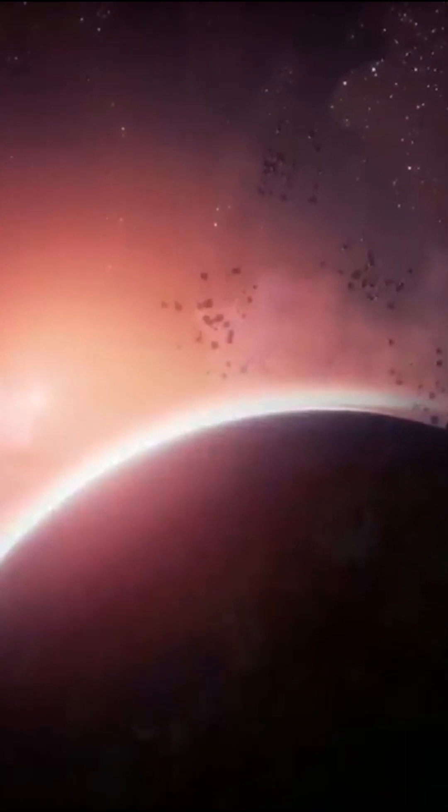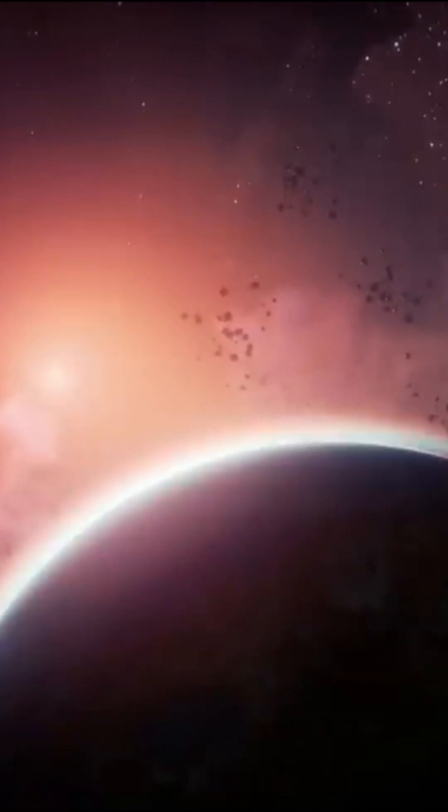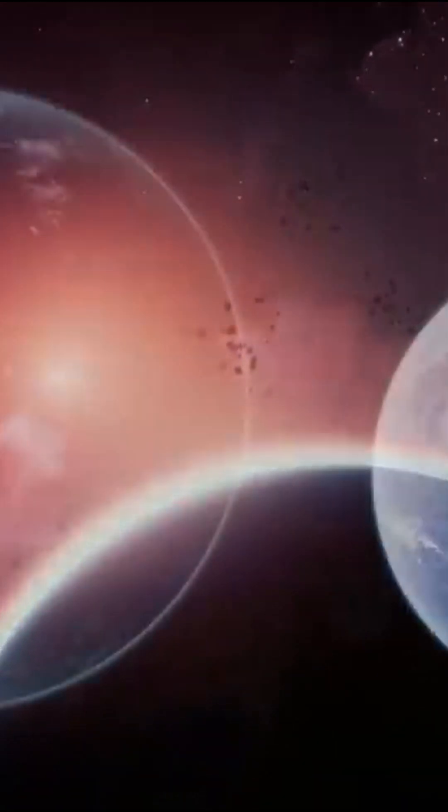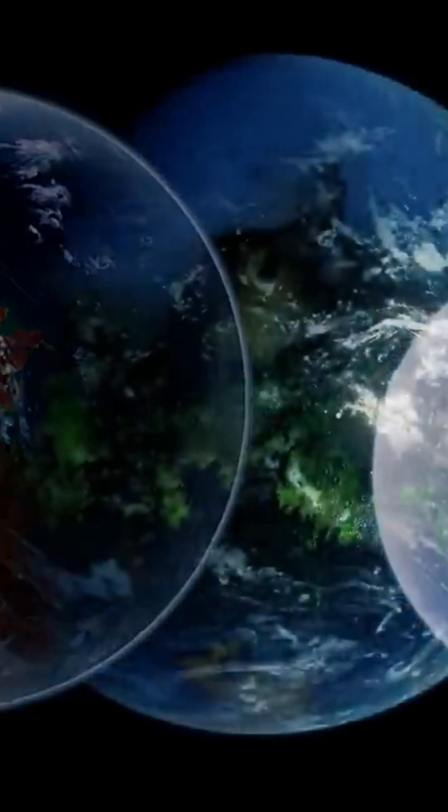Superhabitable worlds, as defined by Heller and Armstrong, are larger than Earth. Superhabitable planets have a mass about two times that of the Earth and a radius of 1.3, the Earth's radius.